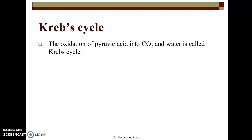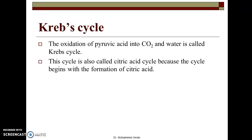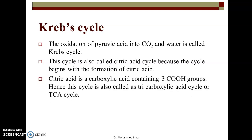Pyruvic acid, as we have seen in the earlier video, is the end product of glycolysis. From glucose, breakdown takes place and at the last step pyruvic acid is formed, which enters into Krebs cycle and finally gets converted into CO2 and water. This cycle is also called citric acid cycle because the cycle begins with the formation of citric acid. Citric acid is a carboxylic acid containing three carboxylic groups, hence this cycle is also called tricarboxylic acid cycle, or in short, TCA cycle.